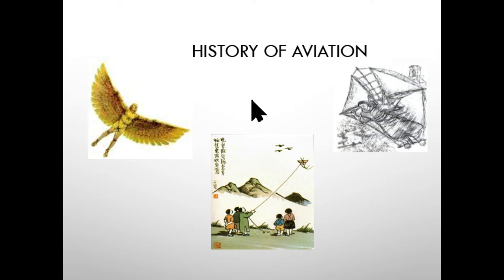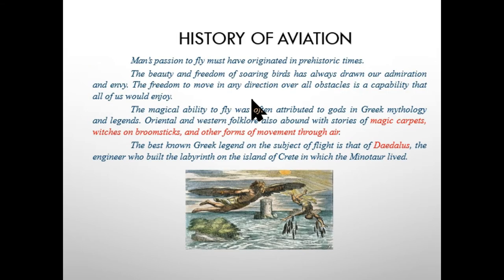The first topic on this lecture is the history of aviation — how the evolution of aviation took place. In the olden days, people tried different methods to fly in the air. They copied the birds and the fish, how they move, and with respect to those observations they tried different methods. A lot of people also died in this process.